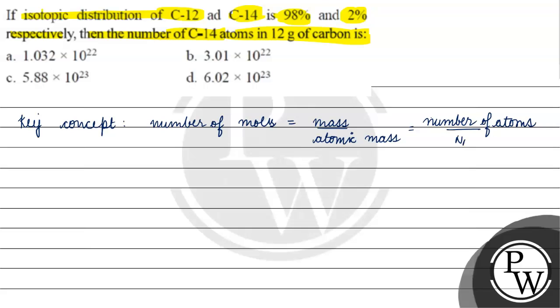Mass of carbon is given - how much? 12 grams. This 12 grams, which is 2%, will be mass of C-14. Mass of C-14 will be 2% of 12, which equals 0.24 grams.